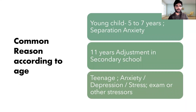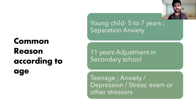It is important to know the commonest reason for school refusal in different age groups. In very young children, like those who are five to seven years old, separation anxiety is the commonest reason for school refusal. While children who are eleven years or older, the commonest reason is switching to secondary school. And in teenage, the commonest reasons include anxiety, depression, and certain stressors.